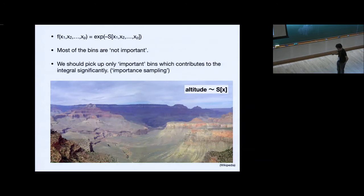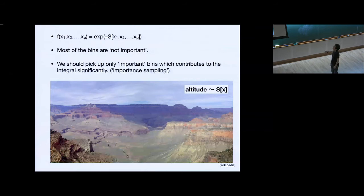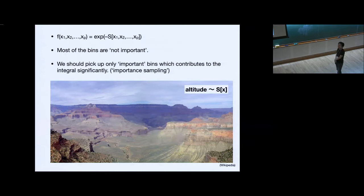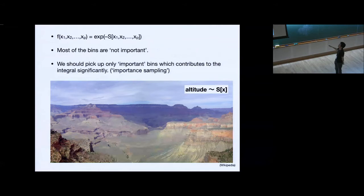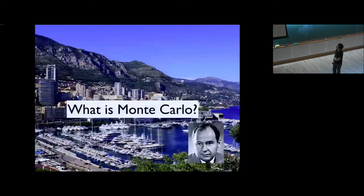We should pick up only the important bins that contribute significantly to the actual integral. This is the idea of importance sampling, and Monte Carlo actually does it. This picture is from Monaco, I think, and this is a picture of Von Neumann, who came up with using random numbers to do such integrals. Consider field theory on Euclidean spacetime with action S of phi. By choosing a clever algorithm, we generate field configurations with probability proportional to exponential of minus S. When the action is small, we generate that configuration a lot; when large, we don't want to generate it.